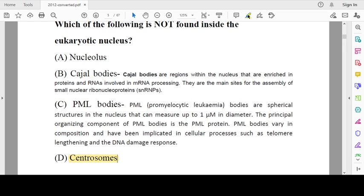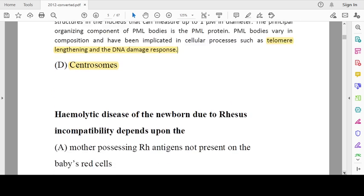Why? Centrosome is present in the cytoplasm, not centromere. Whereas nucleolus is present. Cajal bodies are regions within the nucleus involved in mRNA processing. Cajal bodies are the main sites involved in assembly of small nuclear ribonucleic proteins involved in splicing. PML bodies, or promyelocytic leukemia bodies, are spherical structures in the nucleus implicated in telomere lengthening and DNA damage responses.